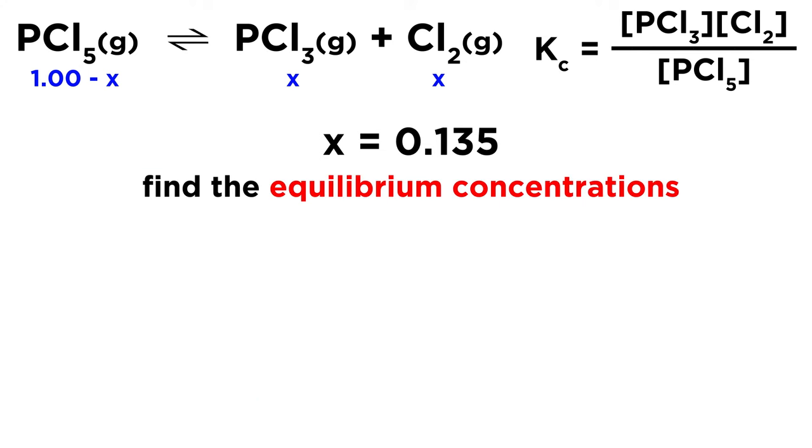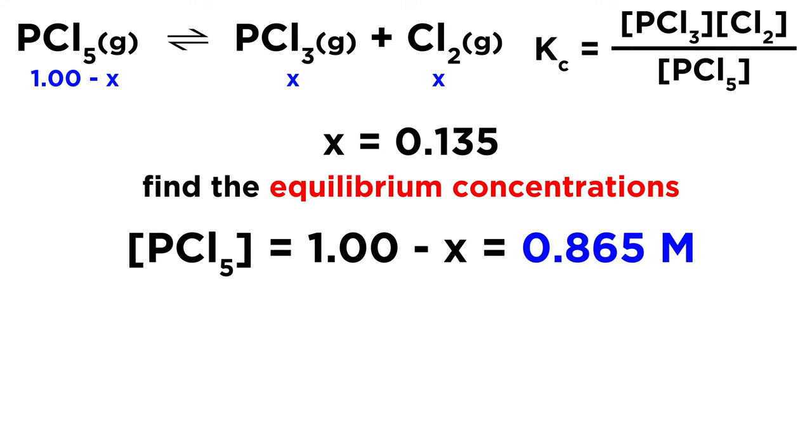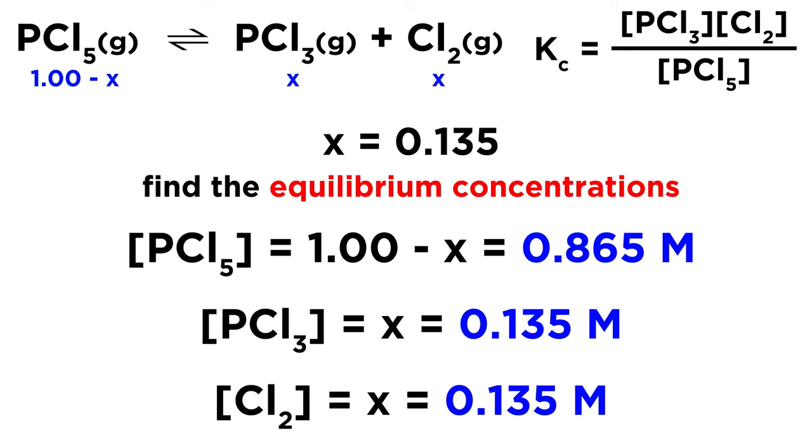And now we can find the equilibrium concentrations. PCl5 was 1.00 minus X, so that becomes 0.865 molar. And then PCl3 equals X, and so does Cl2, so those will both be 0.135 molar. And that's how we use an icebox to get equilibrium concentrations.